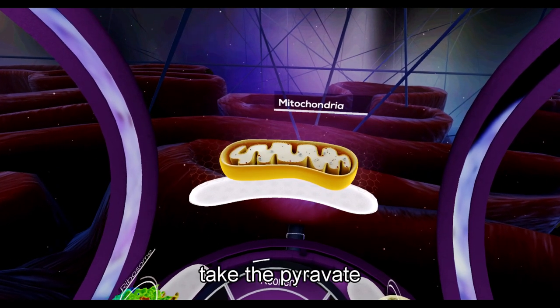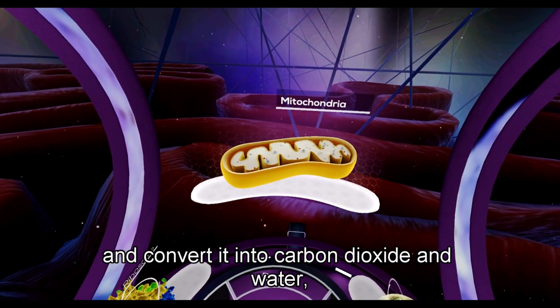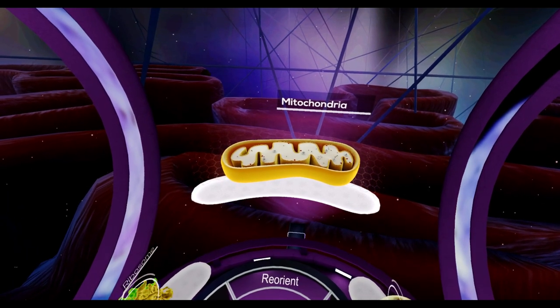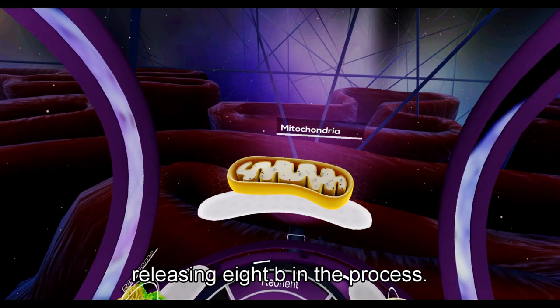Mitochondria take the pyruvate and convert it into carbon dioxide and water, releasing ATP in the process.